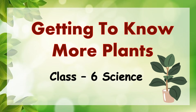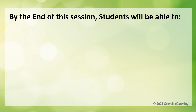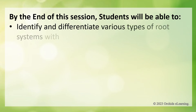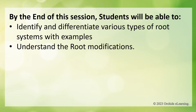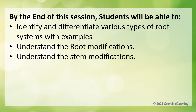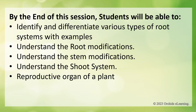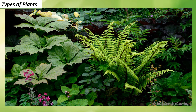Getting to know more plants - Class 6 Science. By the end of this session, students will be able to identify and differentiate various types of root systems with examples, understand root modifications, understand stem modifications, and understand the shoot system.